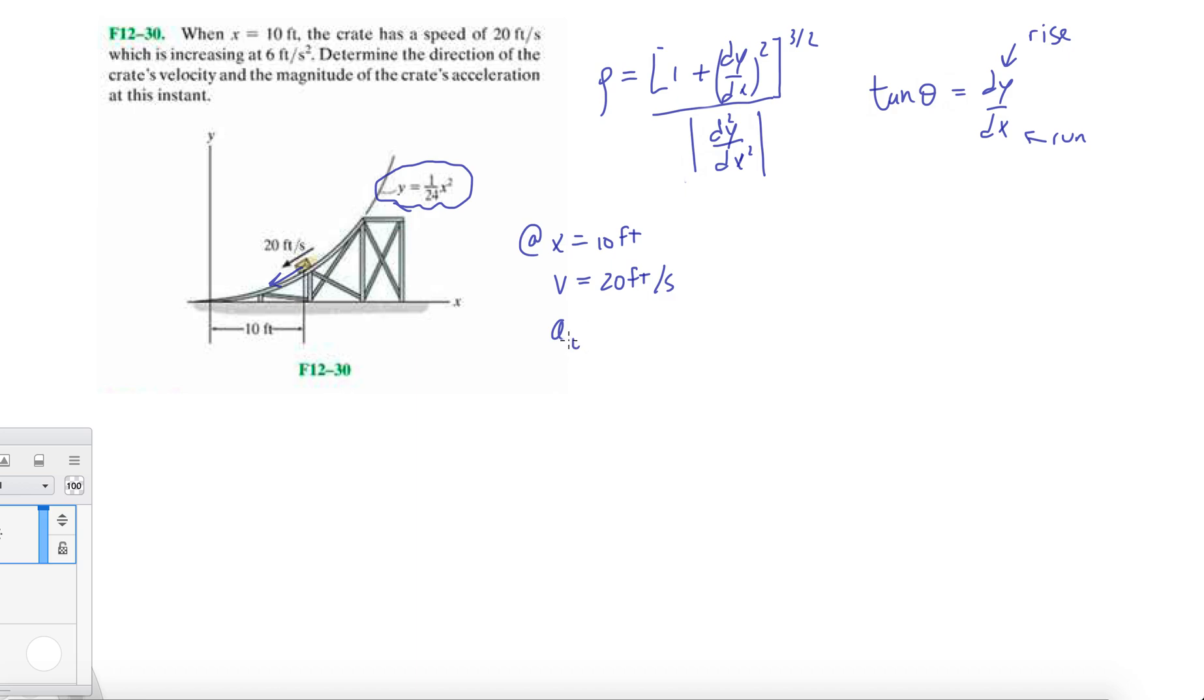Determine the direction of the crate's velocity and the magnitude of the crate's acceleration at this instant. We need to first find a_n, which is v squared over rho, because we're already given a_t at 6 feet per second squared. Let's calculate rho first.